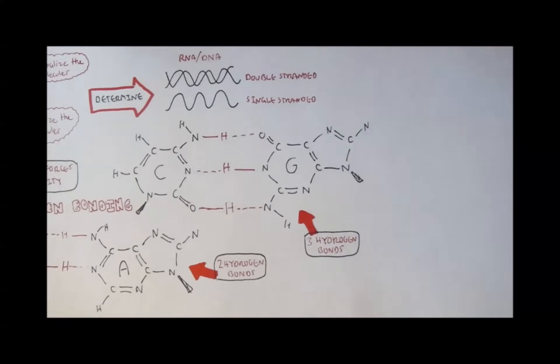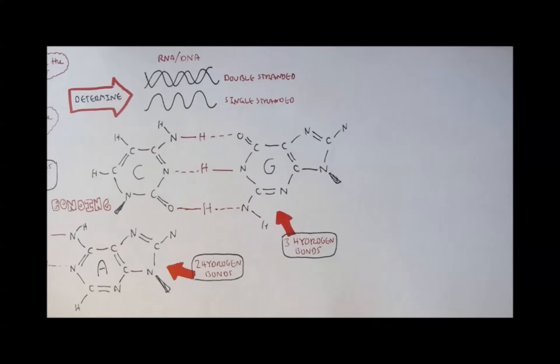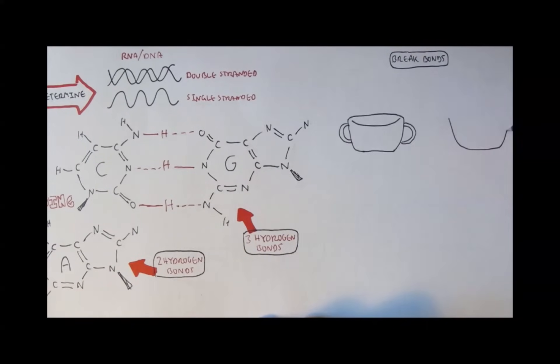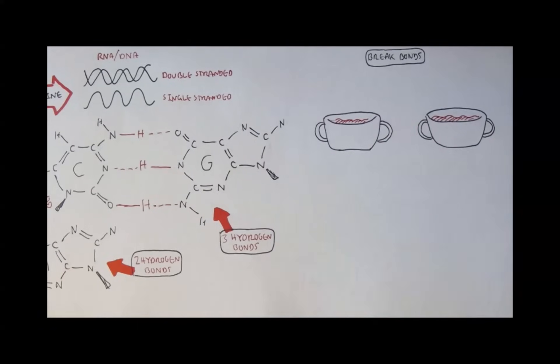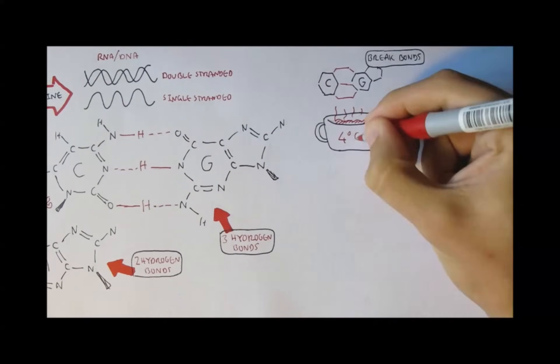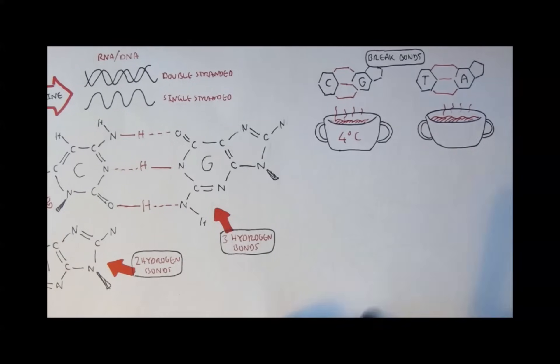C and G has more hydrogen bonds. An example can be shown by their breaking points. For example, cytosine and guanine's breaking point where the hydrogen bonds break can be broken at 4 degrees Celsius, whereas adenine and thymine's breaking point is at 2 degrees Celsius.